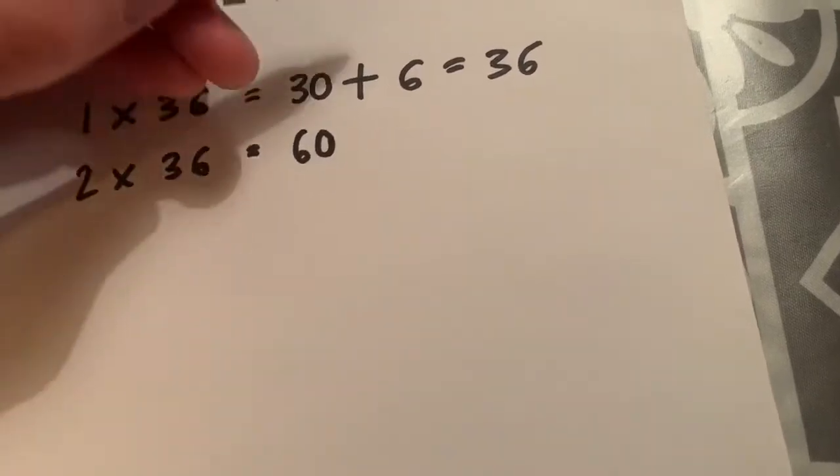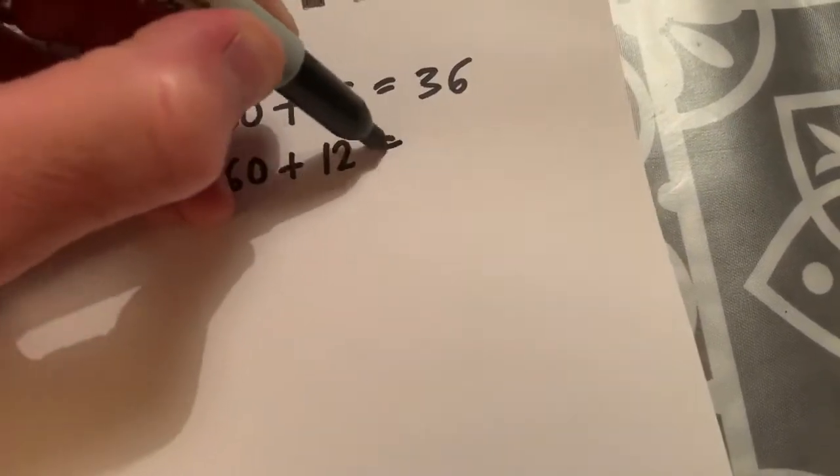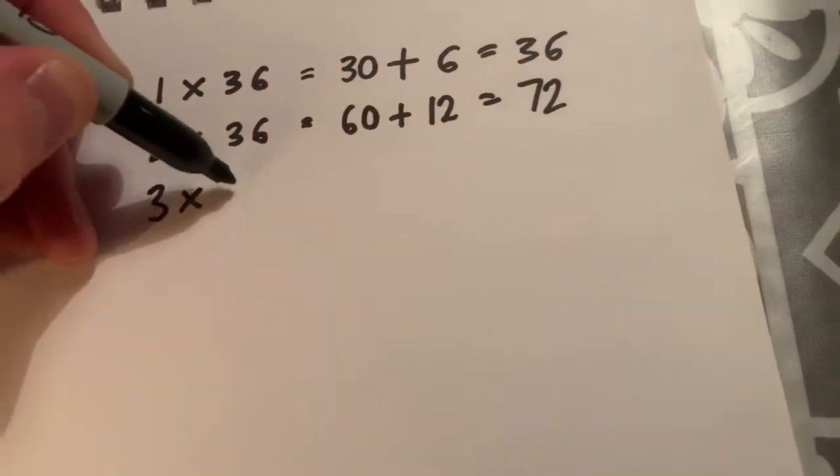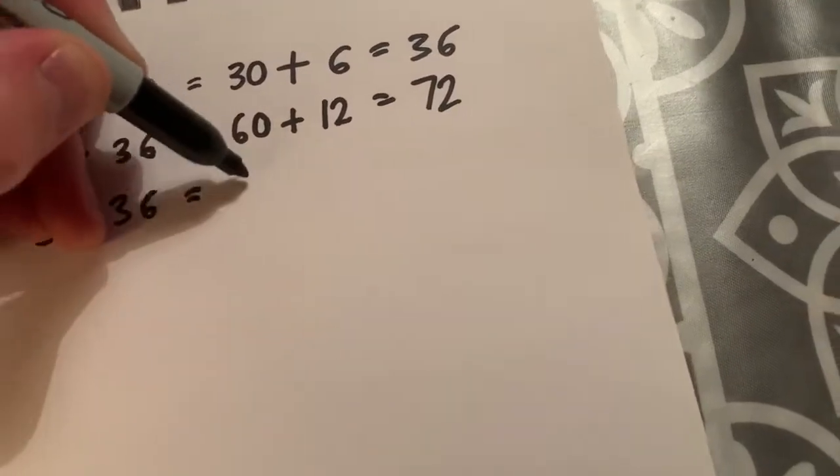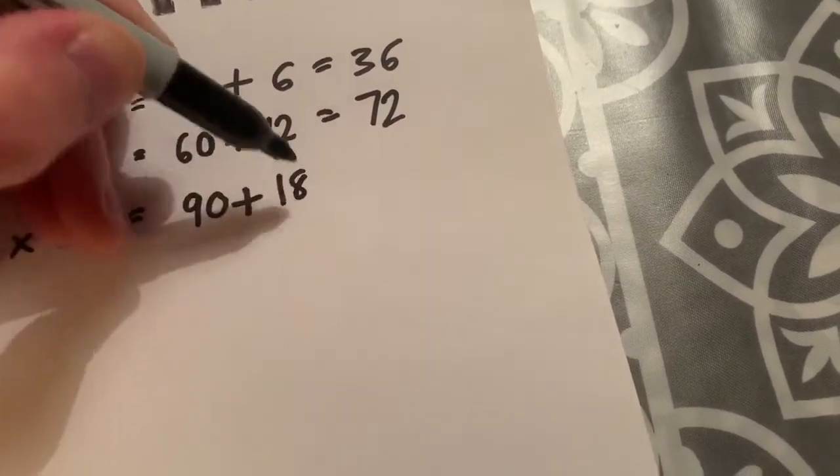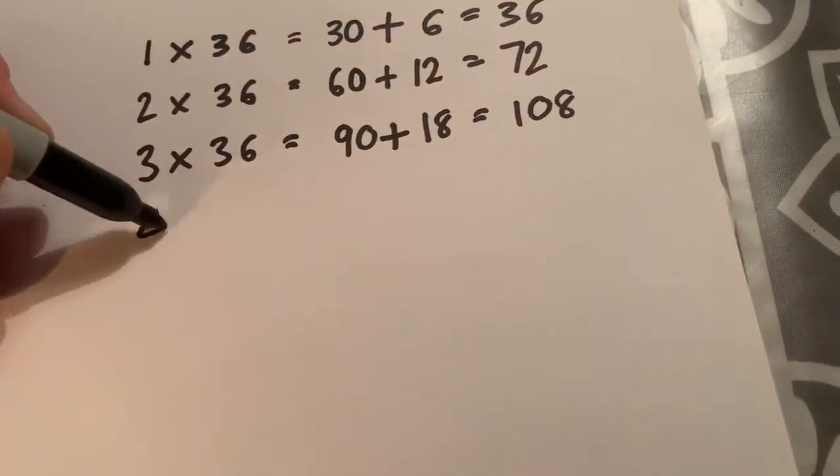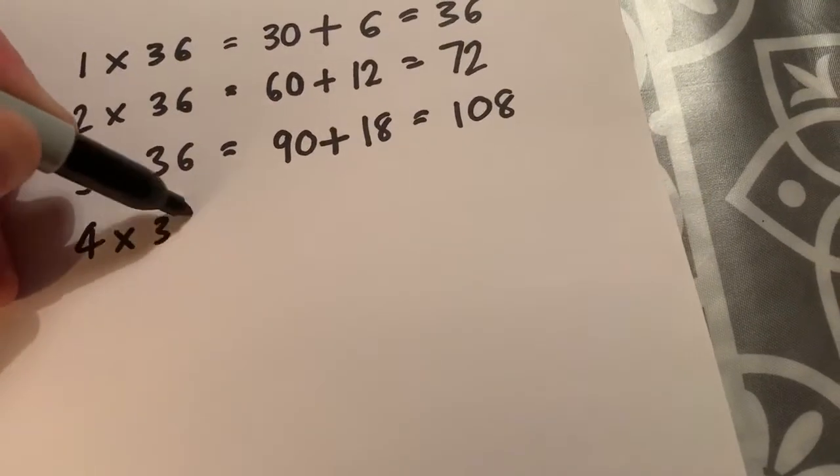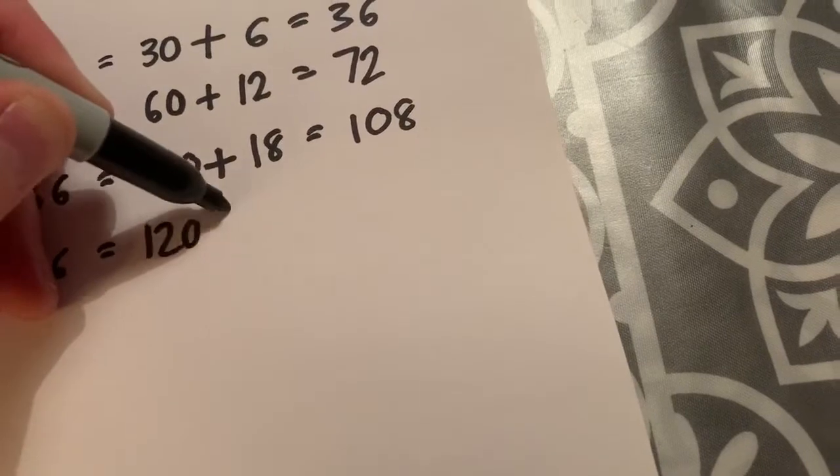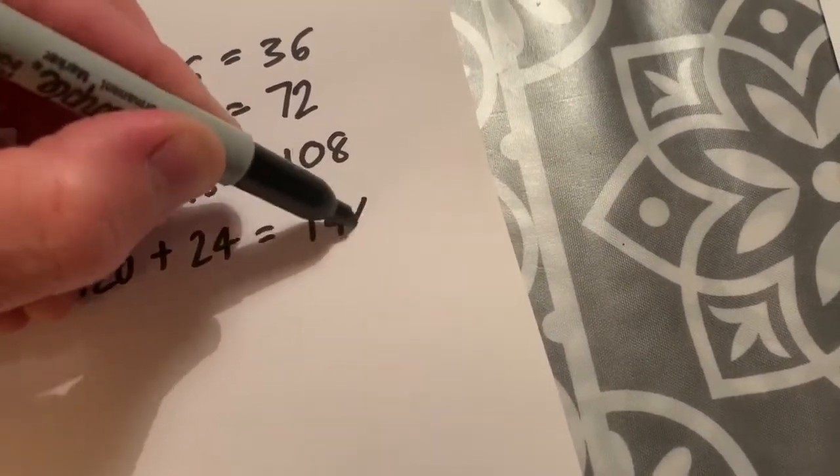So 60, and this is my 6 times tables knowledge, plus 12 equals 72. 3 times 36 equals 90 plus 18, 108.